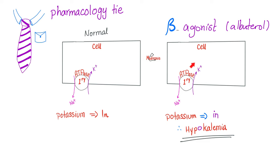This condition is known as hypokalemia — low potassium in the blood. Why is it called kalium? Because it's an alkaline substance, such as potassium alkali. The word alkali is derived from an Arabic word, al-qalawi, similar to the word algebra.